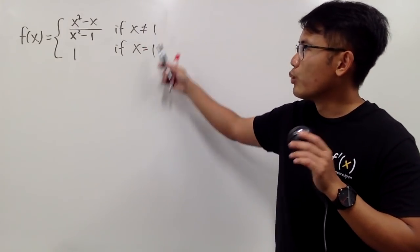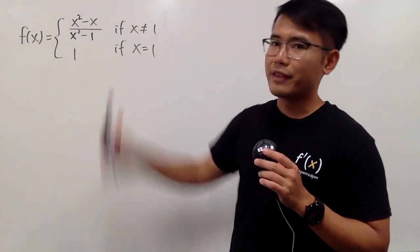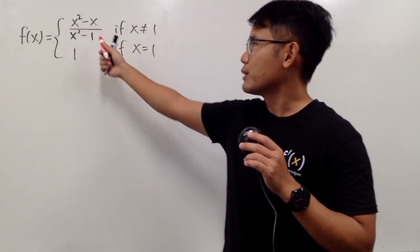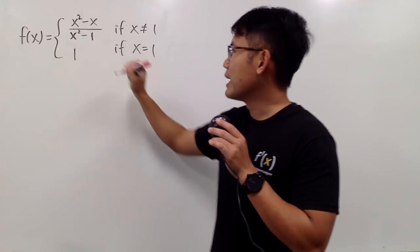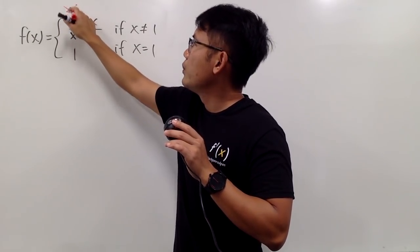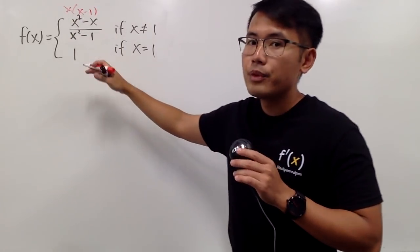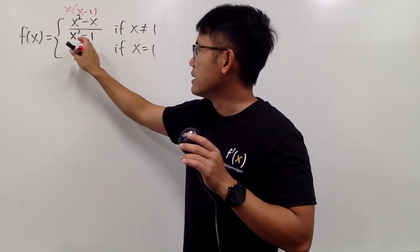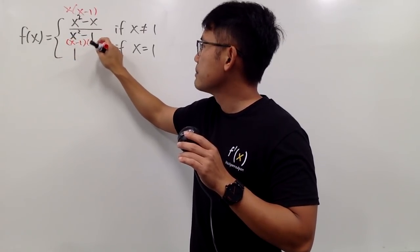When x is not equal to 1, we have this expression. How can we make a graph of that? Well, this looks scary, but we do notice we can factor things out and cancel things out. On the top, I can factor out an x, and then we will get x minus 1. And then on the bottom, we can factor this out. This is the difference of two squares, so I get x minus 1 times x plus 1.